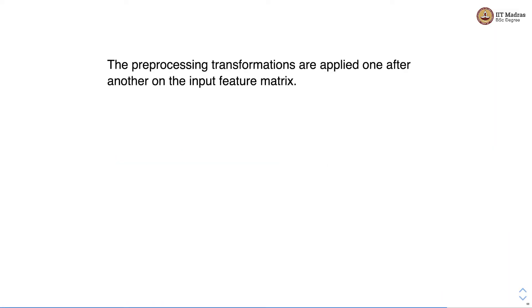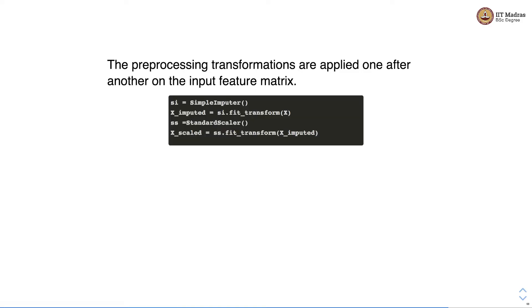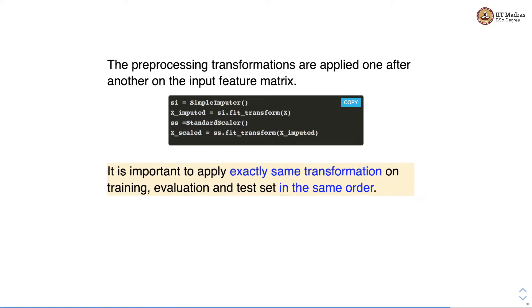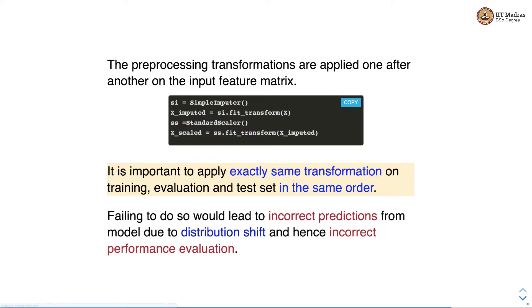The pre-processing transformations are applied one after another on the input feature matrix. For example, we apply simple imputer and standard scalar one after the other on the feature matrix. It is important to apply exactly the same transformation on the training, evaluation, and test set in the same order. Failing to do so would lead to incorrect predictions from the model due to distribution shape and hence incorrect performance evaluation.